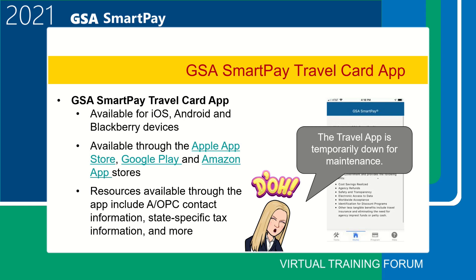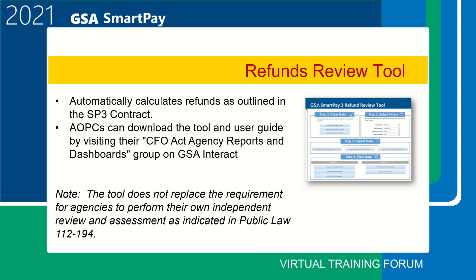Let's move on to the GSA SmartPay Travel Card app. The GSA SmartPay Travel Card app is available for iOS, Android, and Blackberry devices through the Apple App Store, Google Play, and Amazon App Stores. Some of the features included are links to GSA Per Diem, MyTSA, and the National Weather Service. There's also a section called MyTrips, which is an itinerary page to keep track of your travel, and notification functions include a trip reminder. Unfortunately, the Travel app is currently down for maintenance, but keep checking back for updates.